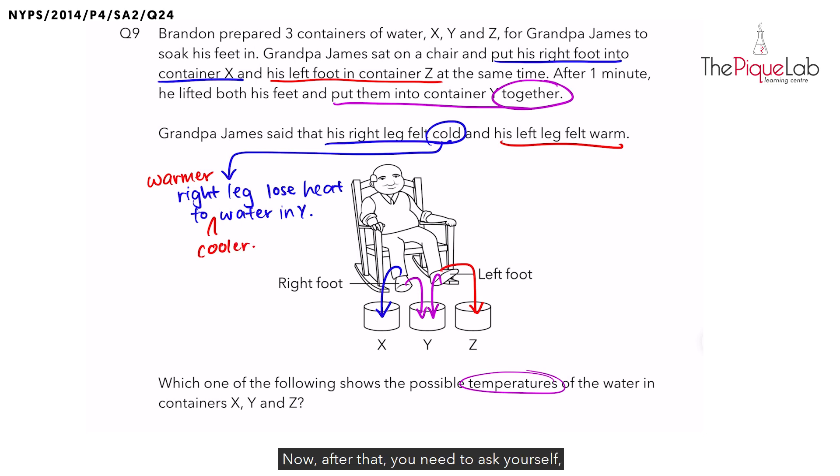Now after that, you need to ask yourself, why is the right leg warmer than Y? Before placing the right leg inside container Y, where did we place the right foot? We placed it inside container X. That means the water in X must have caused the right leg to become warmer than Y. So what can we assume? We can say that the water in X must be warmer than the water in Y.